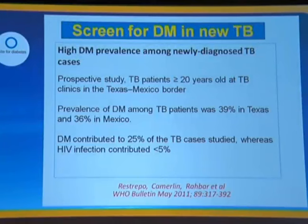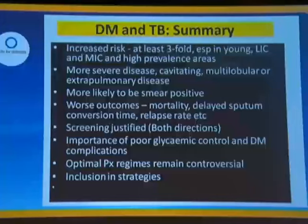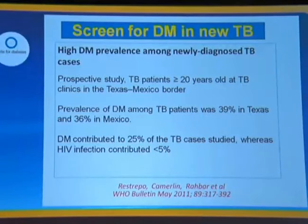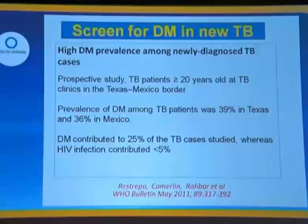Screening for diabetes in patients with TB is an easy no-brainer. Results from the Texas-Mexico border show the prevalence of diabetes among TB patients was 40% in Texas and 36% in Mexico, published in the WHO Bulletin — easily justifying such screening.